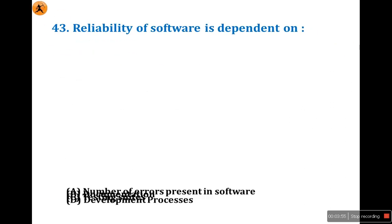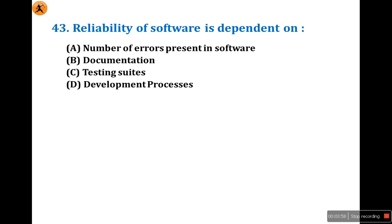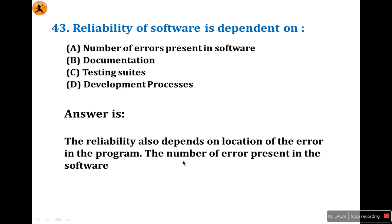The 43rd question: the reliability of software depends on the number of errors present in the software, documentation, testing suites, or development process. Reliability of software is about how error-free the software is, so it definitely depends on the number of errors present. The answer is A.